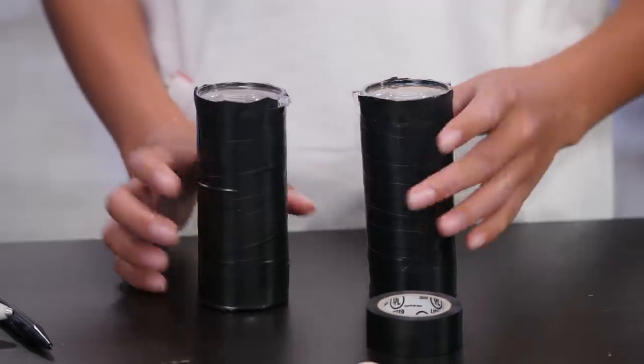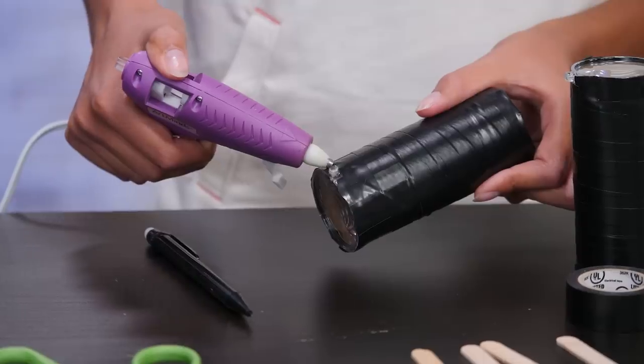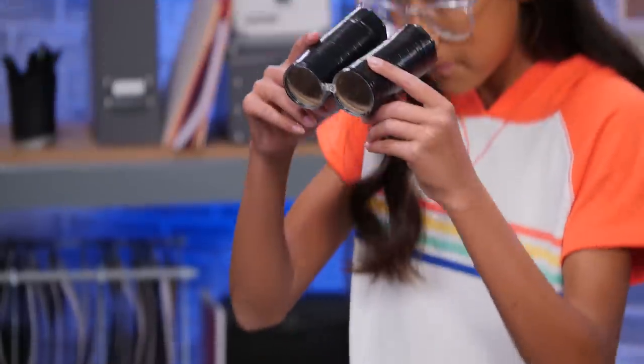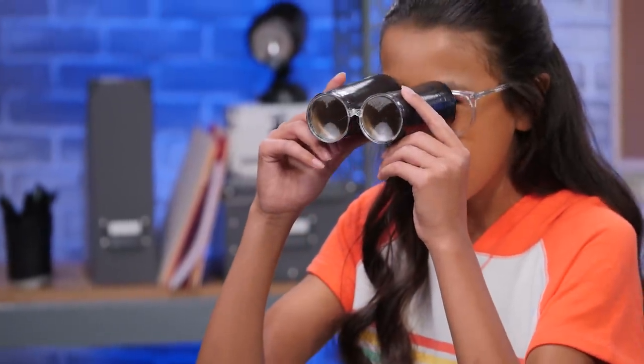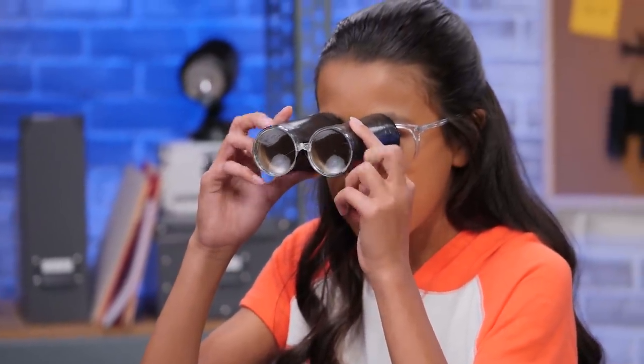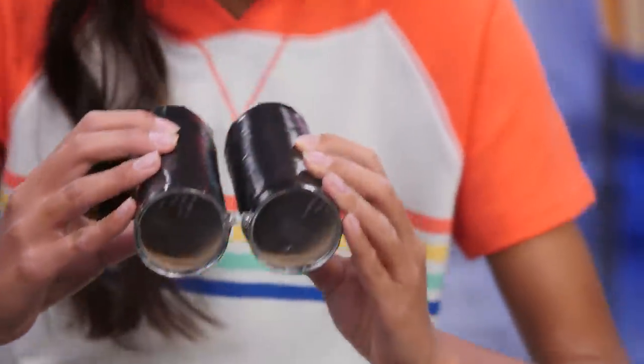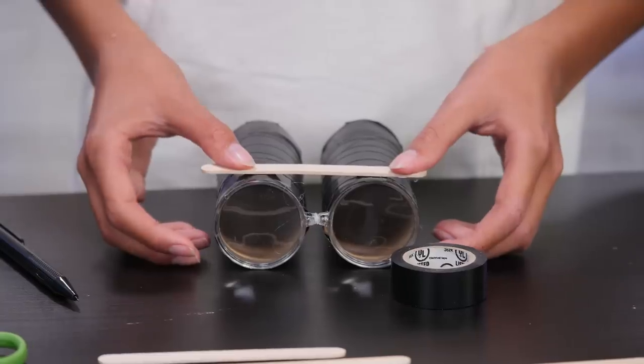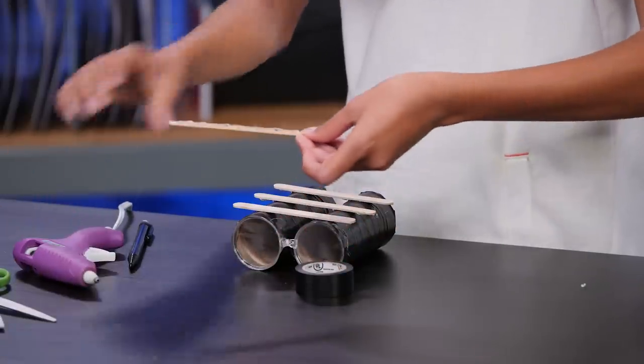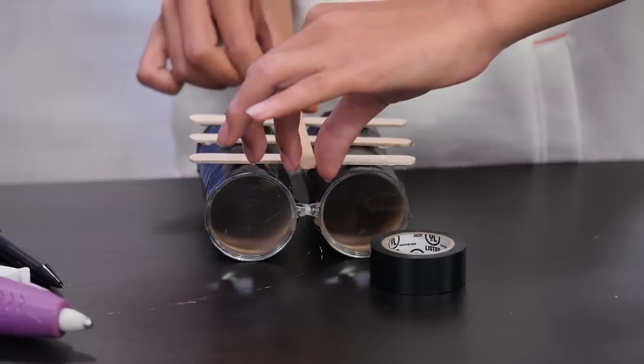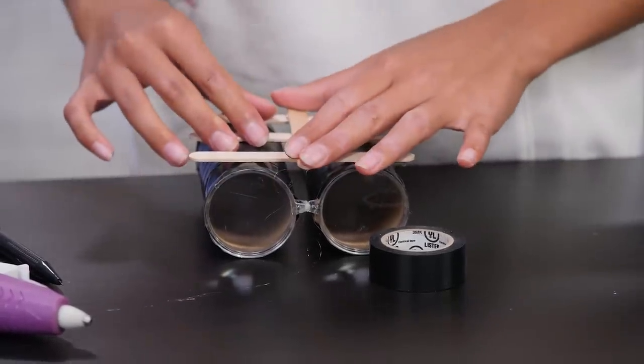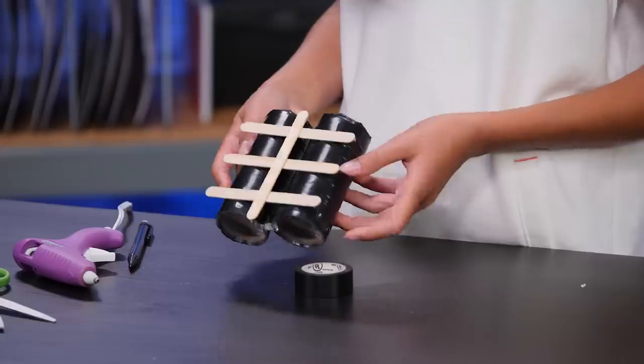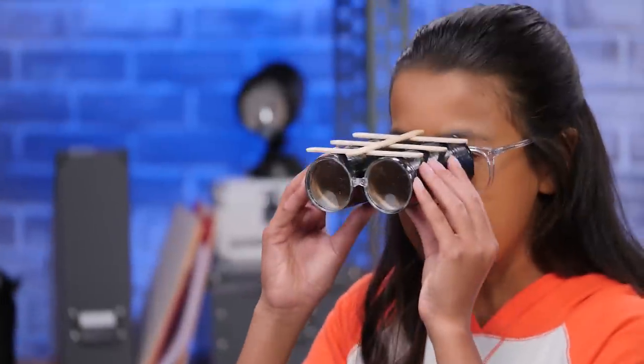Hot glue these two nubs together. Put the eye holes up to your face. Use your eye holes to measure how far apart your tubes should be. Put them down exactly like that on your table. Glue three popsicle sticks across the tubes to hold them together. Glue the fourth one down the middle. Clean up any glue strings that are hanging off. And that's it! Now you have working binoculars.